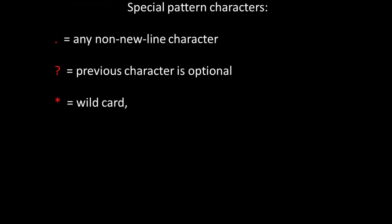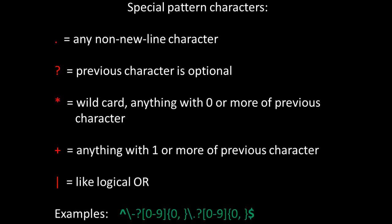To offer even more flexibility, PHP has special pattern characters. The dot operator represents any non-newline character. The question mark means the previous character is optional. The asterisk is the wildcard — zero or more of the previous character. The addition operator means one or more of the previous character. And the pipe symbol is like the logical OR.